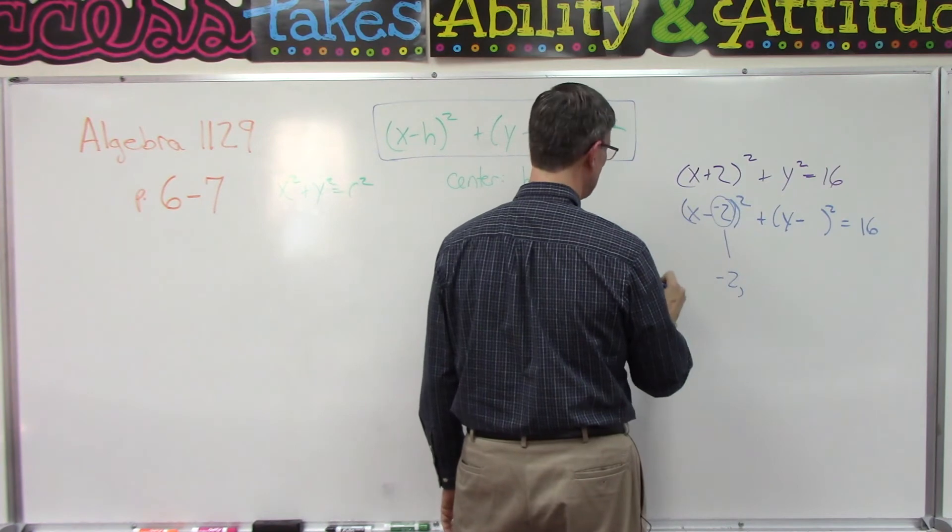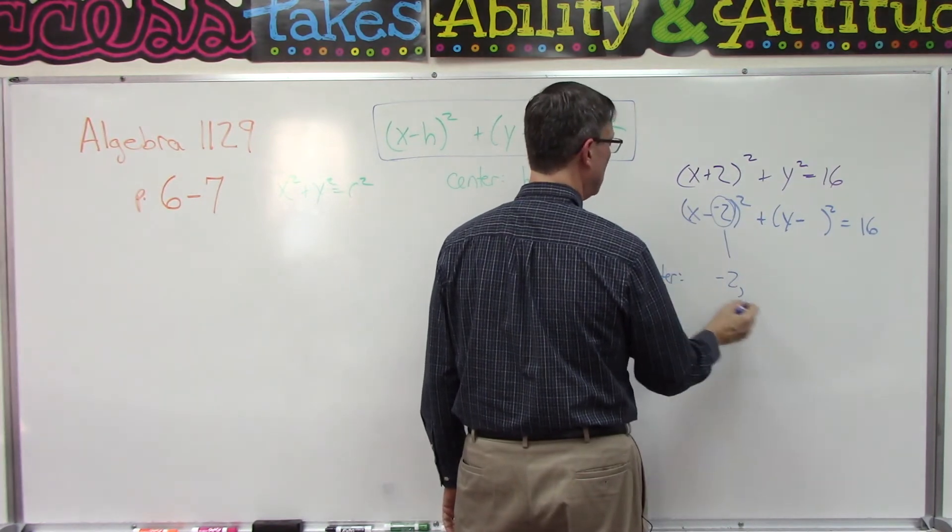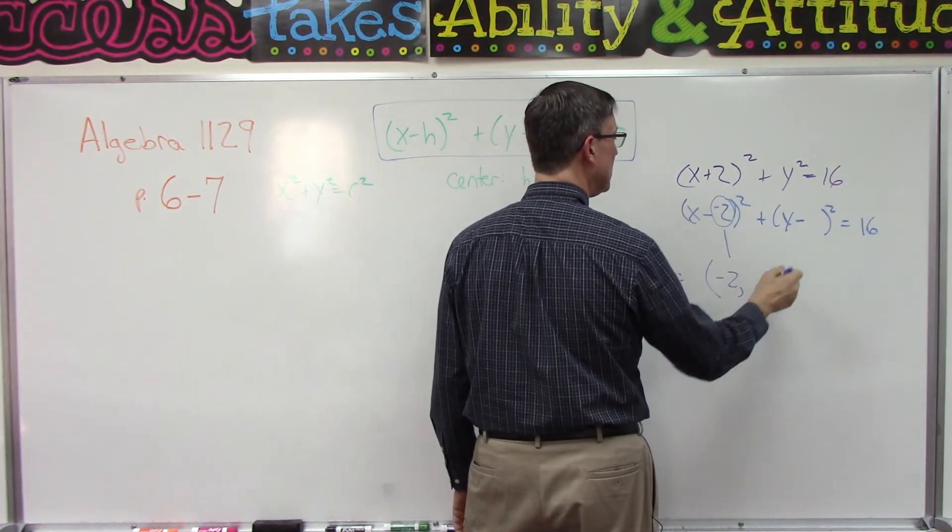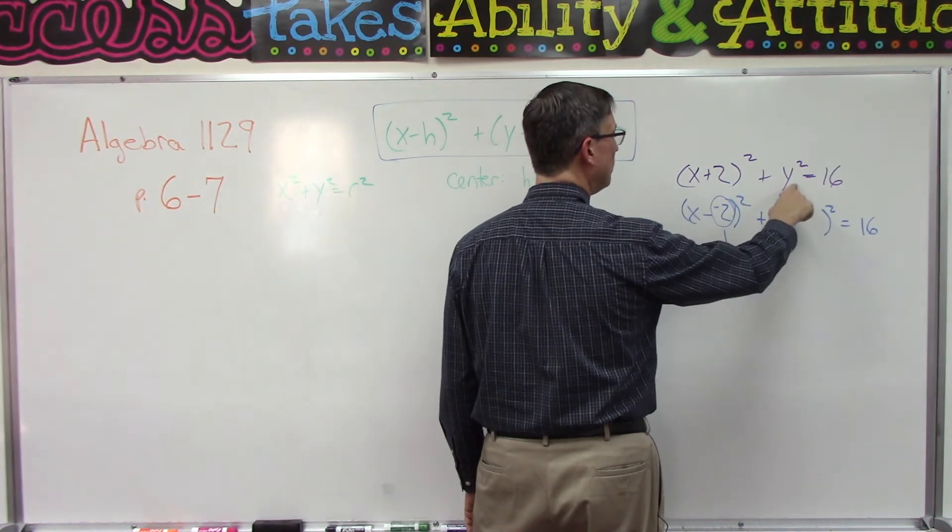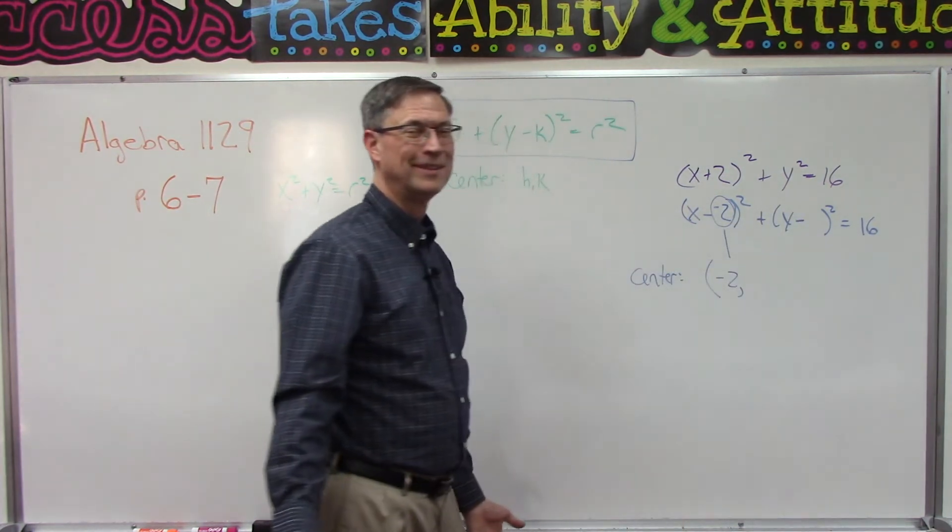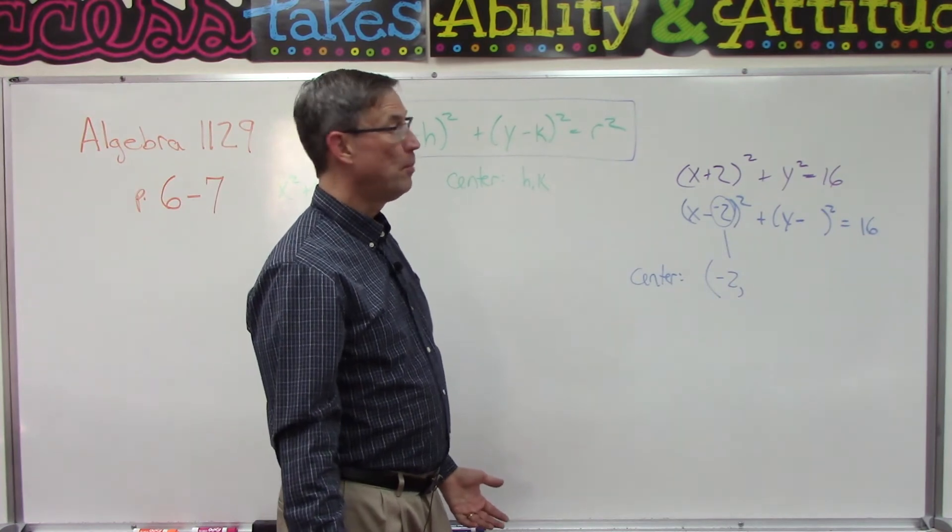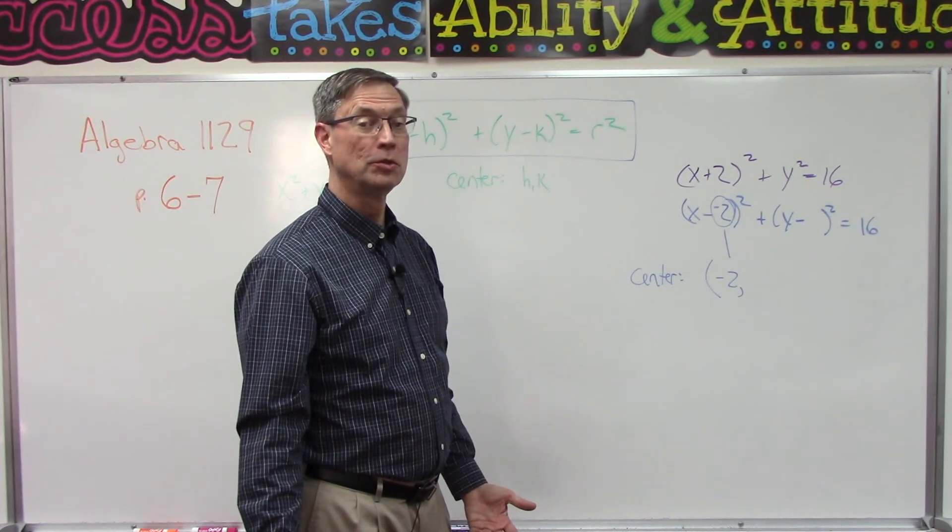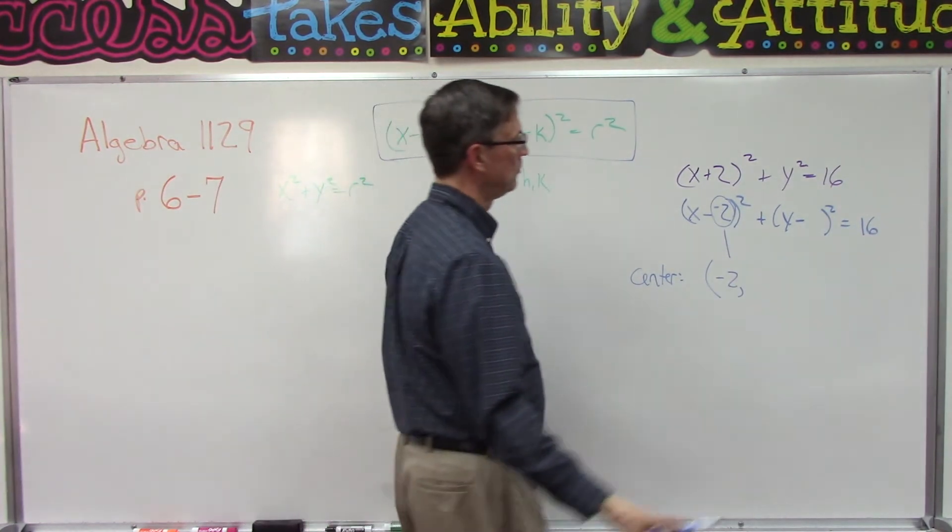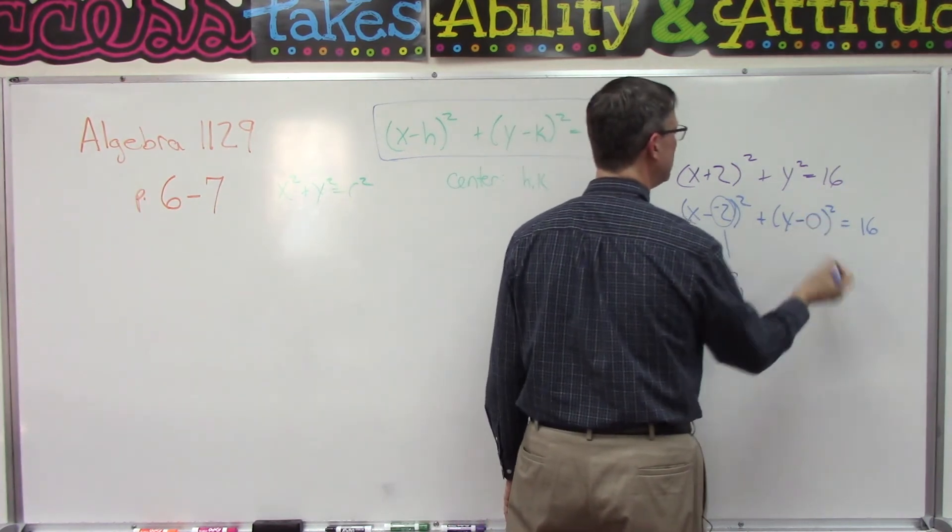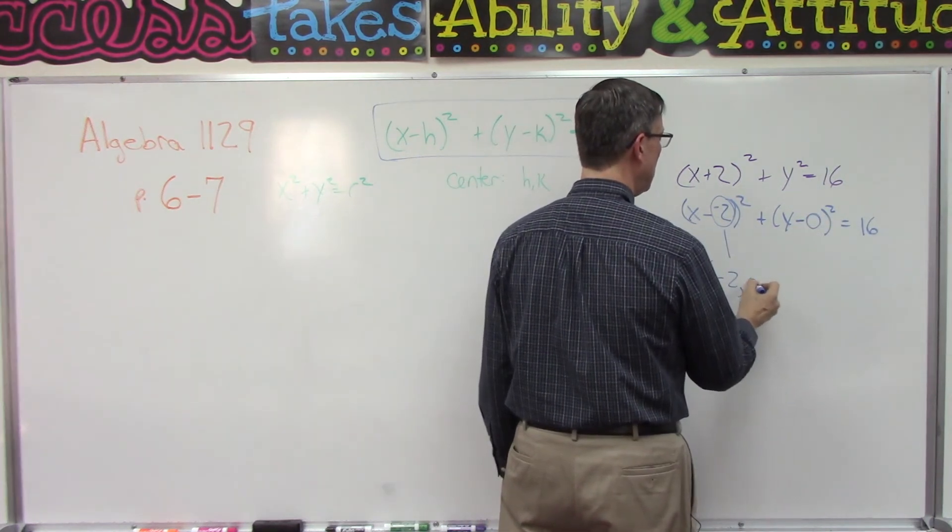Okay, so that means that the negative 2 here comes down and that's going to be my first coordinate for the center. And then the second coordinate is, oh, I don't even have a number. It just says y squared.